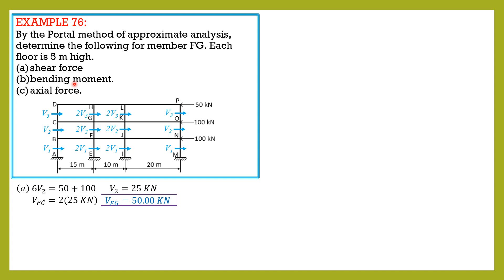Next, bending moment. The bending moment for member FG is the moment at G, moment at F, so it is equal to 2 times v2 times moment arm. Because each floor is 5 meters high, so the moment arm is half of 5, 2.5. So moment at FG is moment F equals moment G equals 2 times v2 times 2.5.